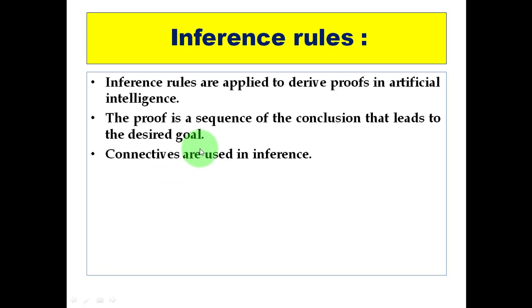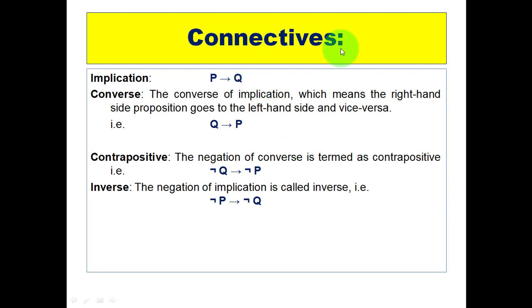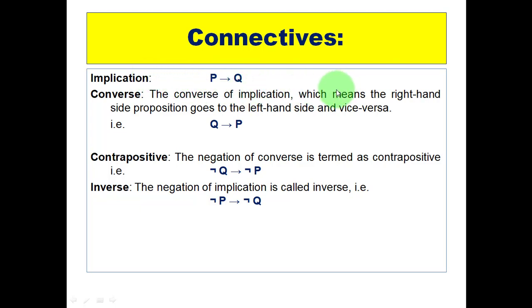We use connectives in these rules. Connectives are used as operators during the inference procedure. As illustrated in the previous lecture, the first connective is implication. Implication is written as P implies Q, and the truth table with respect to implication is also important, so I suggest you go through the previous lecture — the link is in the description.